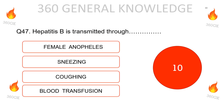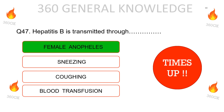Hepatitis B is transmitted through: female Anopheles, sneezing, coughing, or blood transfusion? The correct answer given is female Anopheles.